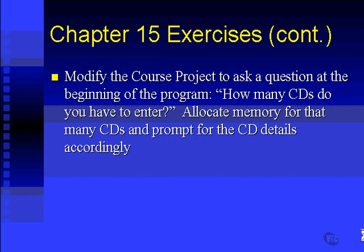How is that going to improve our course project? Well, imagine this: we run the course project and the first question is 'how many CDs do you have to enter?' and we say two. Then it prompts us for the details of those two CDs. The benefit is we're not wasting 98 unused elements of an array of 100 CDs, which is what we were doing before. If we only entered two CDs, we were wasting 98 of them.